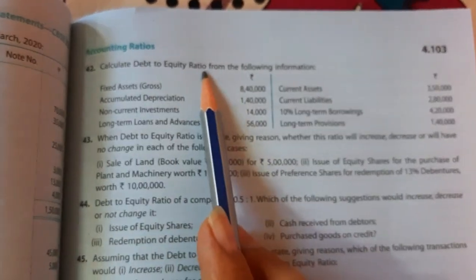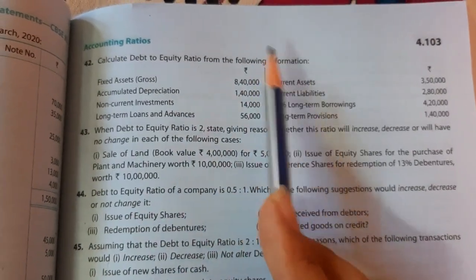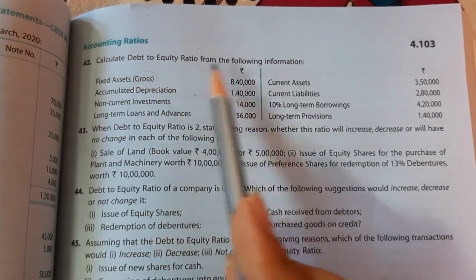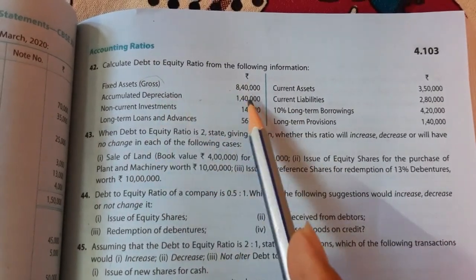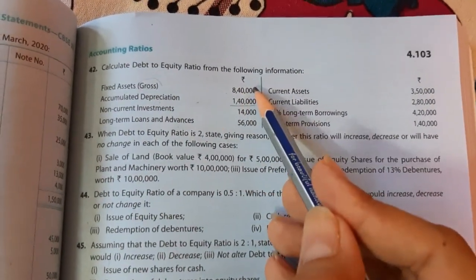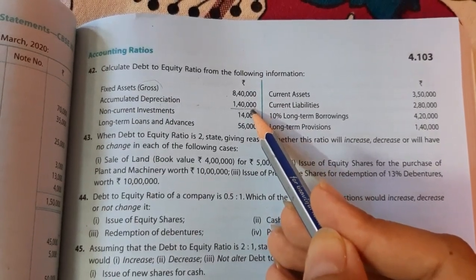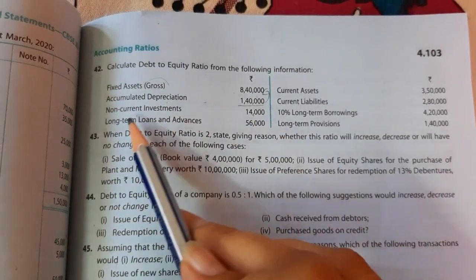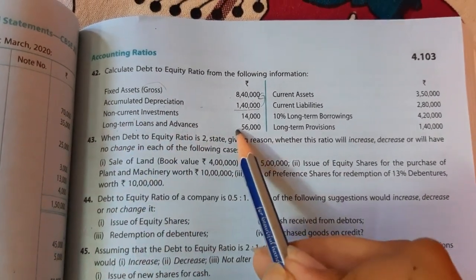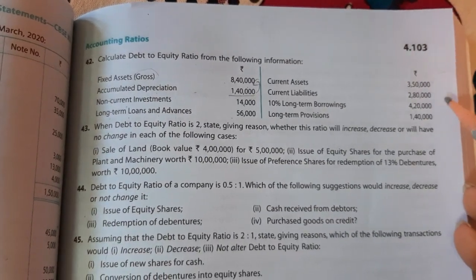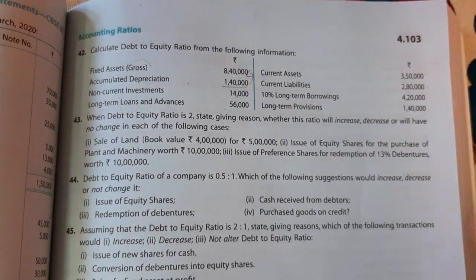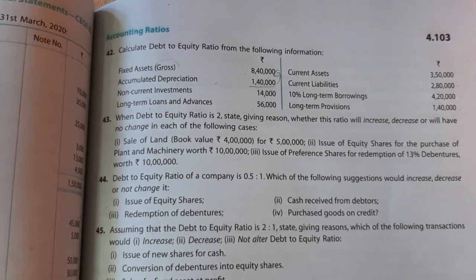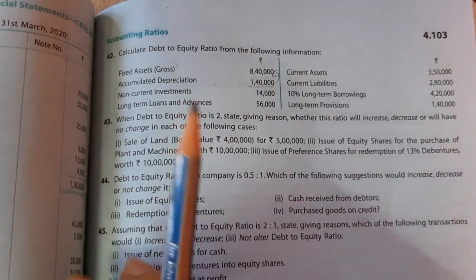Question 42: calculate debt-to-equity ratio. Fixed asset gross 8,40,000, accumulated depreciation 1,40,000 — depreciation has not been deducted, so we must deduct it. Non-current investment, long-term loans and advances, current assets, current liabilities, 10% long-term borrowings, and long-term provisions are given. Both debts and equity must be derived. The long-term debts — 10% long-term borrowings and long-term provisions — are clearly given; add both to get total debts.